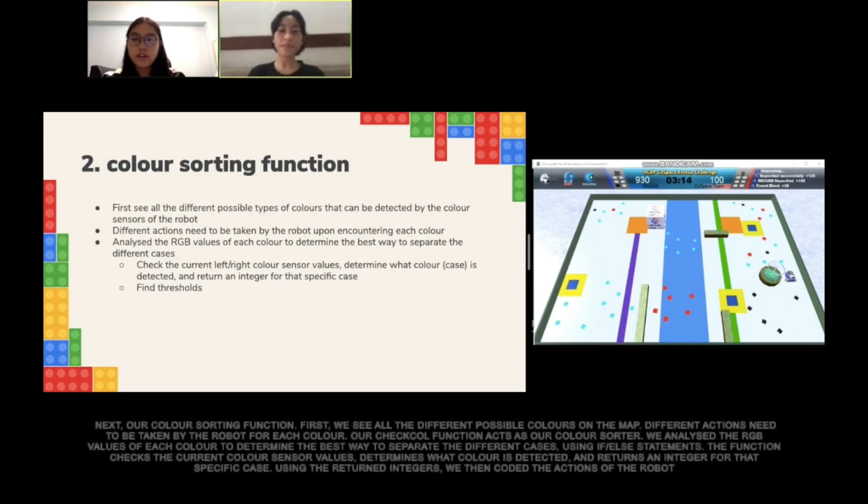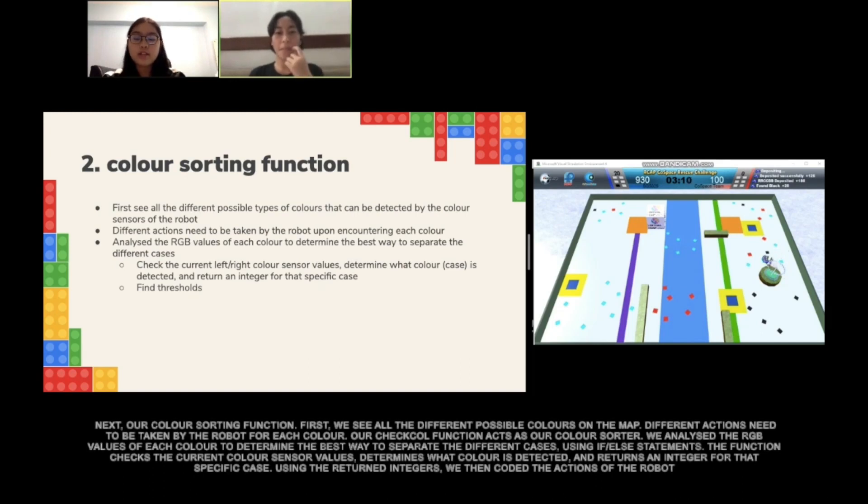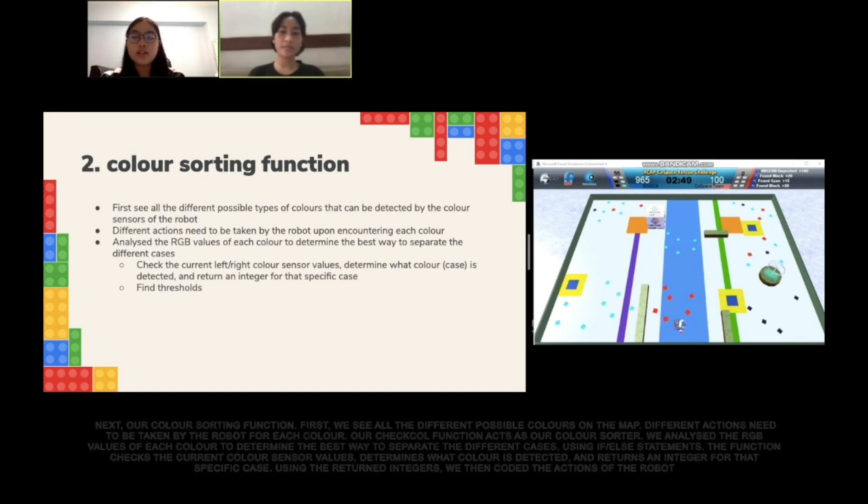Next, our color sorting function. First, we see all the different possible colors on the map. Different actions need to be taken by the robot for each color. Our check color function acts as a color sorter. We analyze the RGB values of each color to determine the best way to separate the different cases. Using if-else statements, the function checks the current color sensor values, determines what color is detected, and returns an integer for that specific case. Using the return integers, we then coded the actions of the robot.